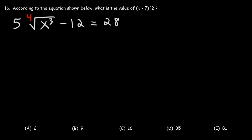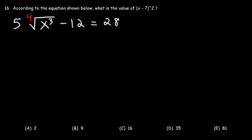Number 16. According to the equation shown below, what is the value of x minus 7 squared? First we need to calculate the value of x and then we can plug it into this expression to get that value. So let's begin by adding 12 to both sides.